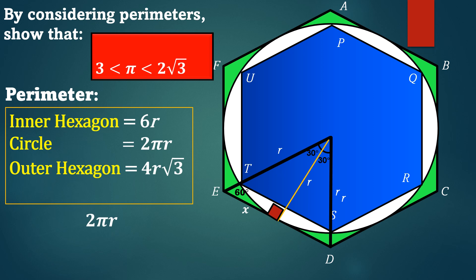2πr is simply 2 times 3.14, it's going to give you something like 6 point something. The perimeter of the circle is greater than the inner hexagon. However, it is less than the outer hexagon.